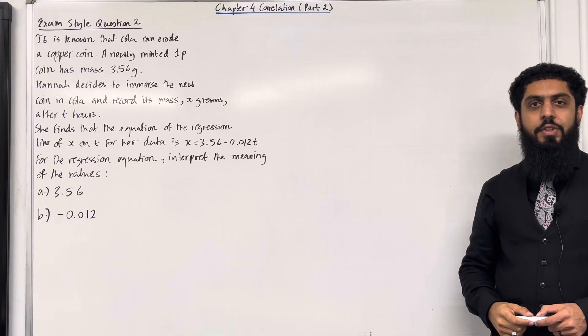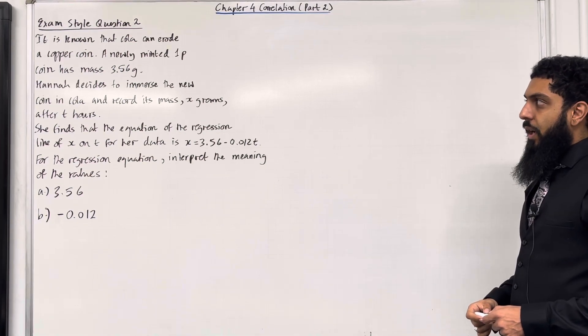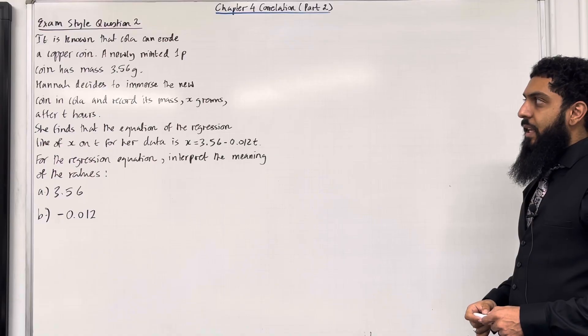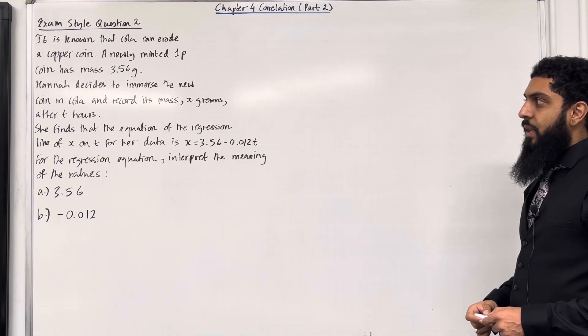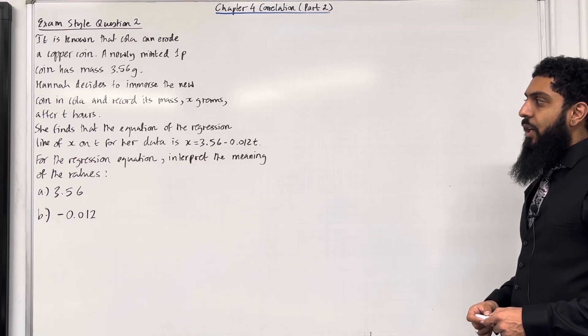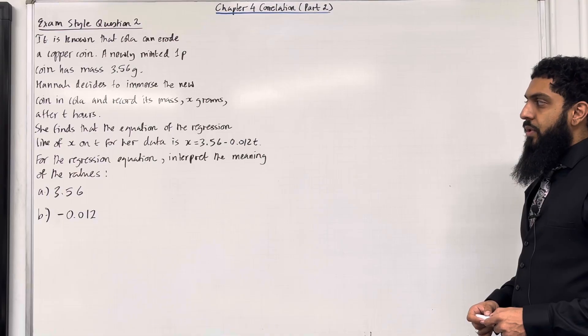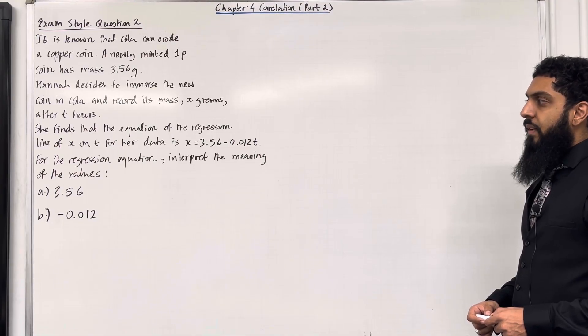Moving on to exam style question 2. It is known that cola can erode a copper coin. A newly minted 1p coin has mass 3.56 grams. Hannah decides to immerse the new coin in cola and record its mass x grams after t hours. She finds that the equation of the regression line of x on t for her data is x = 3.56 - 0.012t. For the regression equation, interpret the meaning of the values part A, 3.56, part B, -0.012.